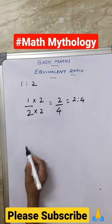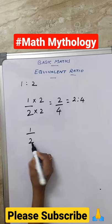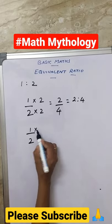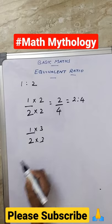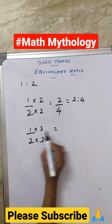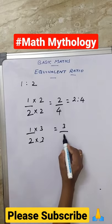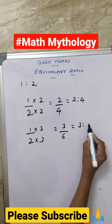The same way you can find another equivalent ratio by multiplying another number, that is multiplying by 3 on numerator and denominator. I will get 1 into 3 is 3, 2 into 3 is 6. So your ratio is 3 is to 6.